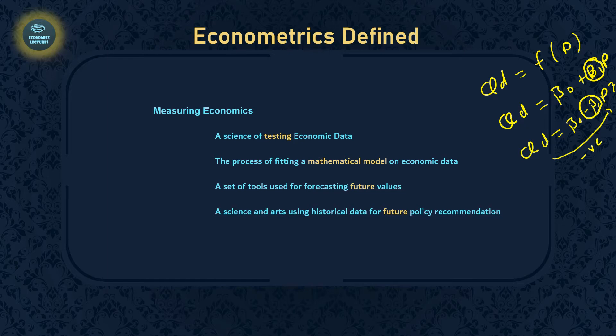To summarize: the general form tells us the variables are related but not the direction or magnitude. The algebraic form tells us the variables are related and gives us the direction — for example, a negative relationship between price and quantity demanded — but still does not tell us the magnitude of the relationship. For that, we need the third form.